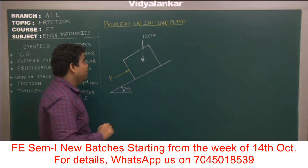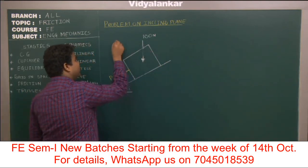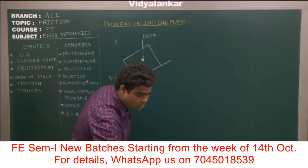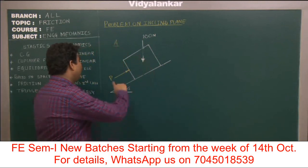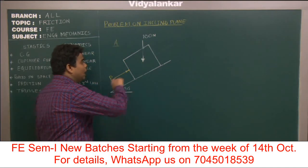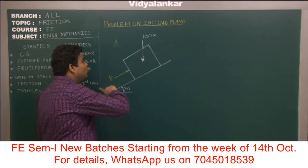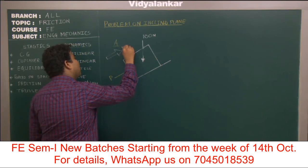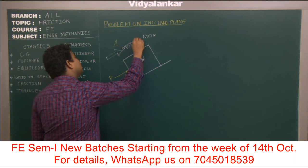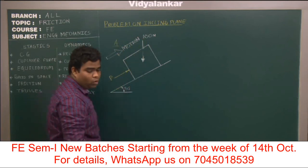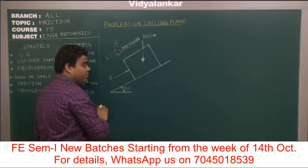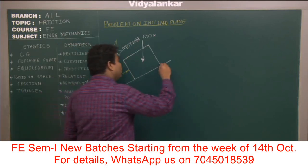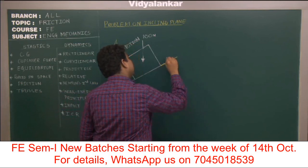Let's take an example of an inclined plane. Let one block, say block A, having weight 100 Newton, be kept on an inclined plane having inclination of 30 degrees, and we want to find the force P required to move this block up. As this block is trying to move up, we set the motion by a double arrow. Friction acts at the contact surface exactly opposite to the direction of motion, so friction comes downwards.